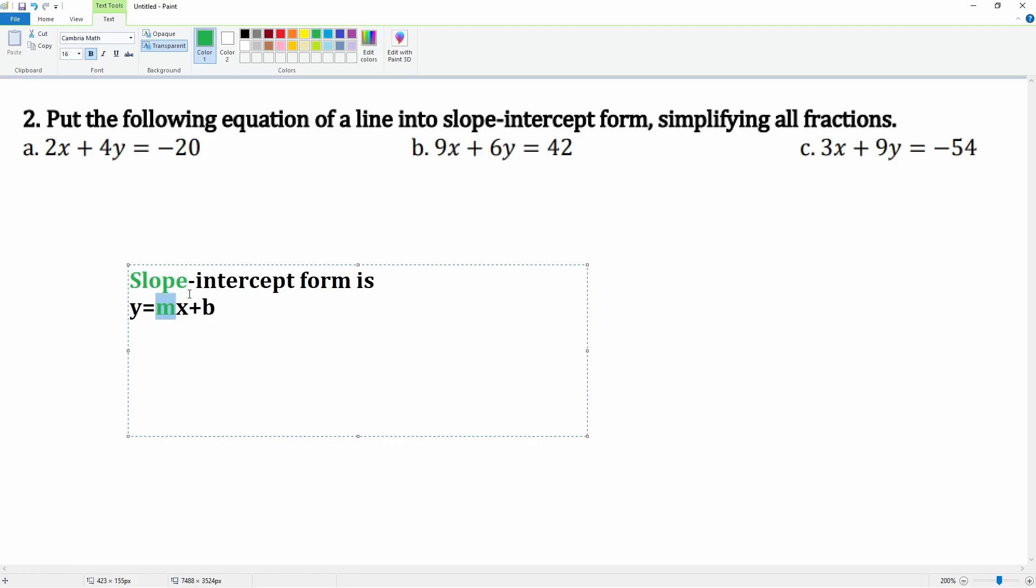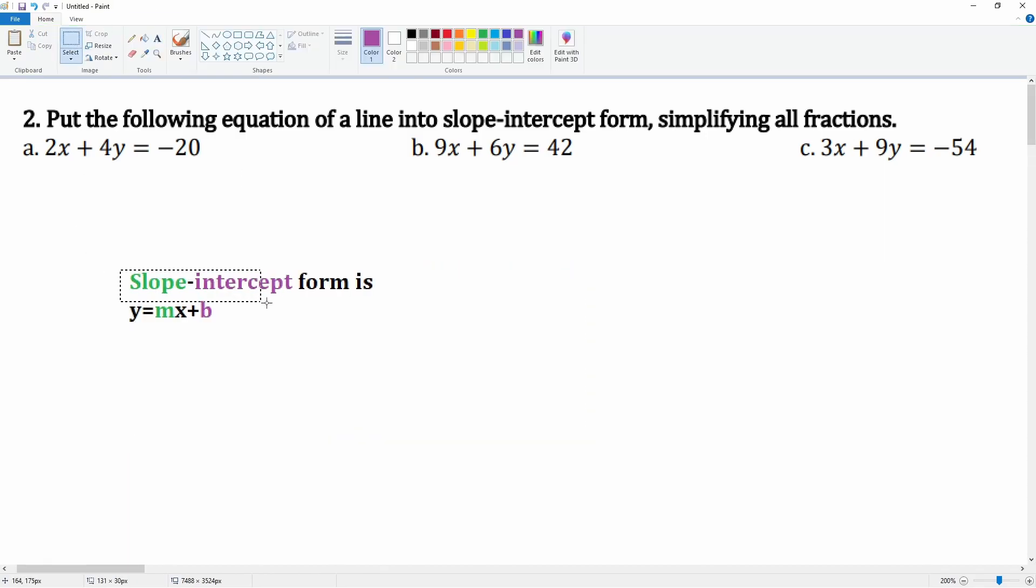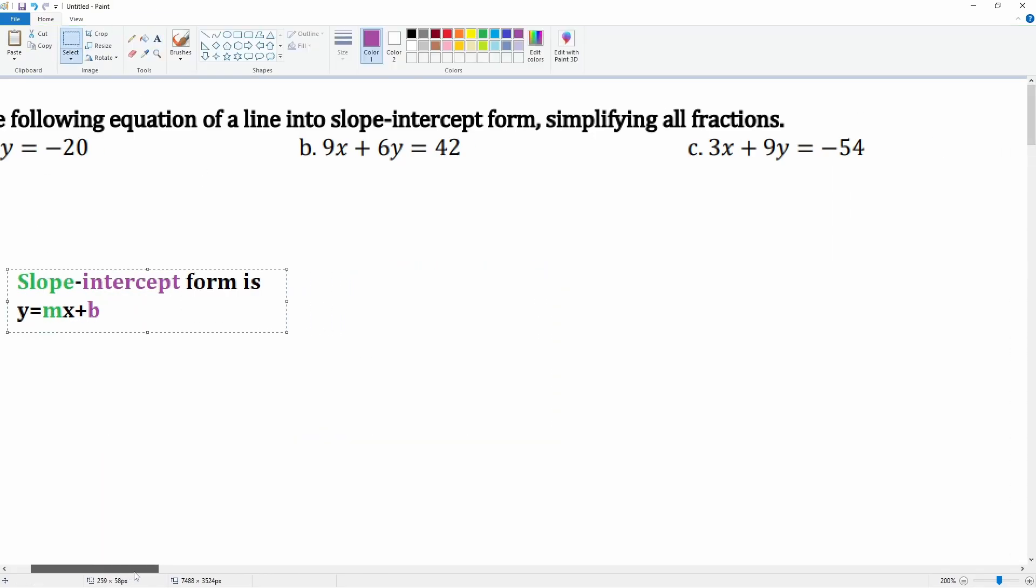The green, that is the slope, and that intercept is referred to the y-intercept which is going to be that b term. This is here to remind you what slope-intercept form is, so you have some reference to what we are doing.